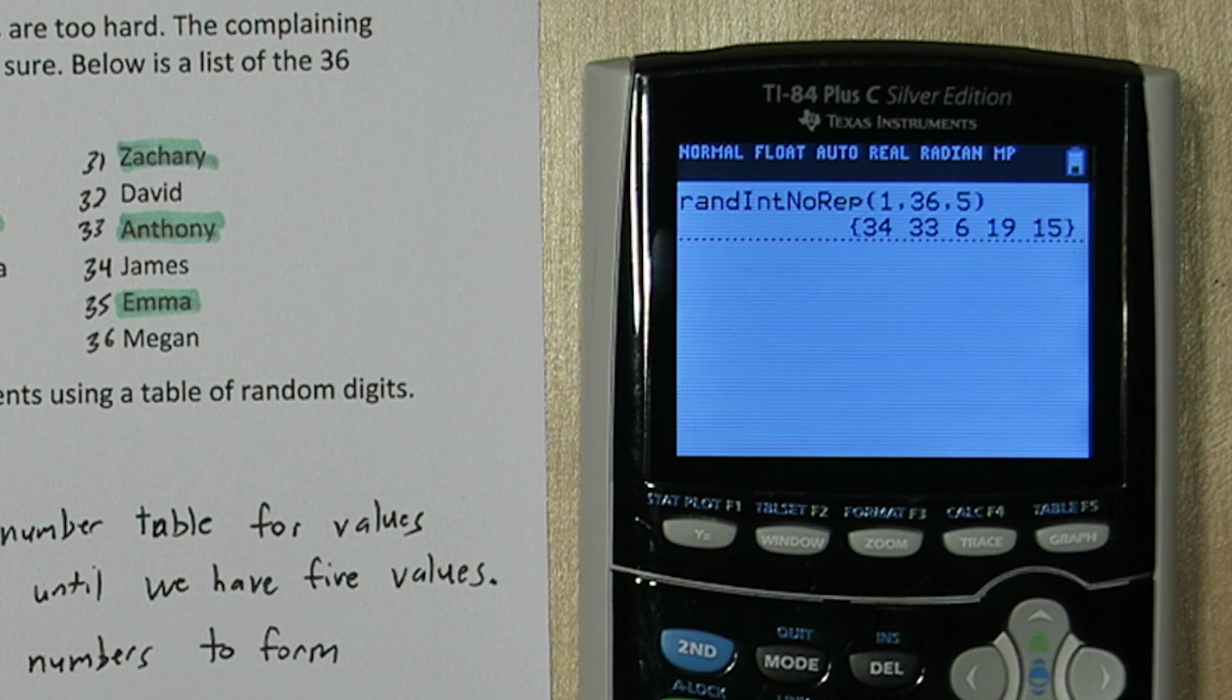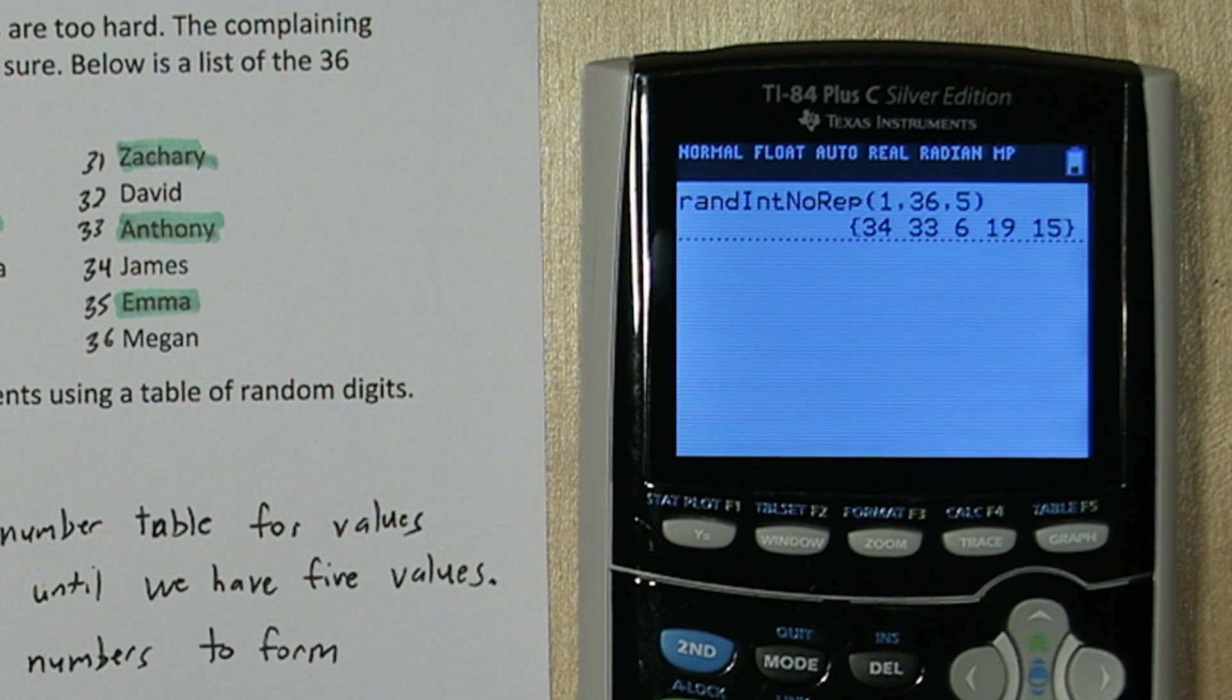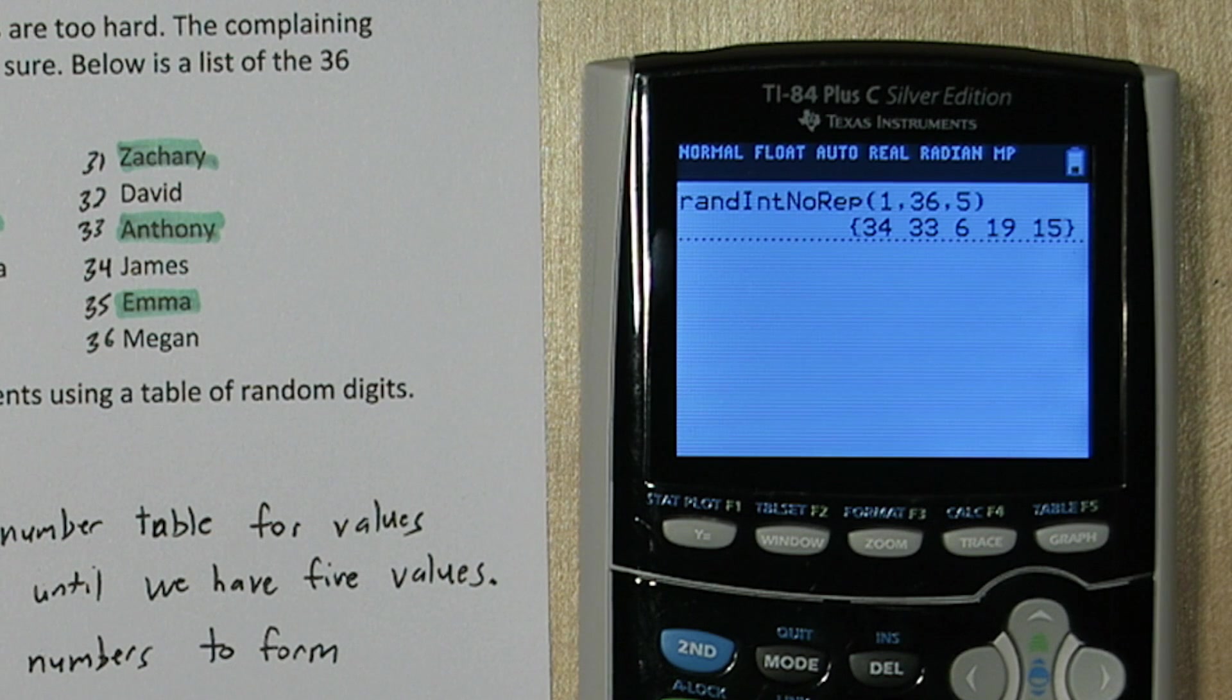here's my numbers. It looks like number 34, James, Anthony, number 33, Alexis, number 6, number 19, Andrew, and 15, Elizabeth. That's our sample.